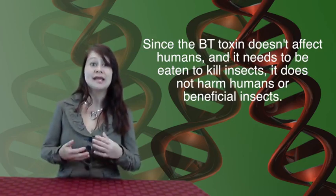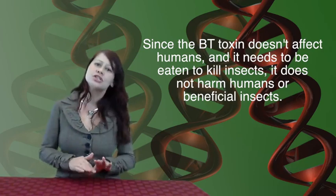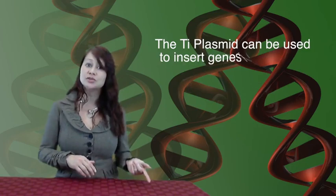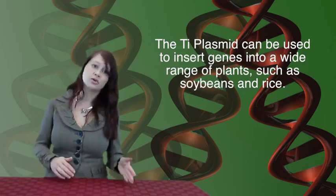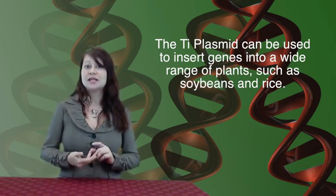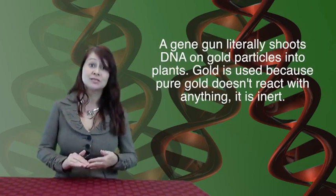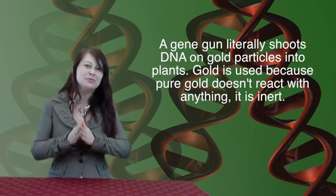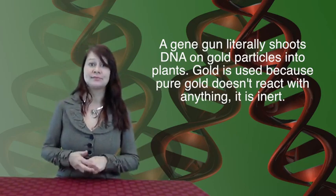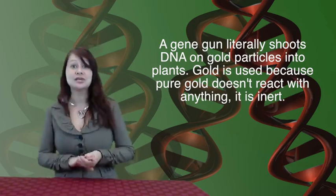Since only insects trying to bite the corn will be affected, this shouldn't harm other beneficial insects. The Ti plasmid can also be used to insert genes into a wider range of plants such as soybean and rice. Some plants are resistant to being affected by the Ti plasmid, and in that case a gene gun can be used to insert foreign DNA — placed on gold particles and literally blasted into the cells of these plants, with some plant cells taking up the foreign DNA. So we talked about how to make transgenic bacteria and transgenic plants. In our next lecture, we'll discuss how to create transgenic animals.